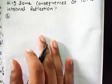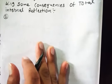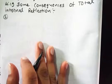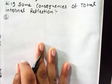Some consequences of total internal reflection. So here I just list out some examples of consequences of TIR. So first example is mirage.